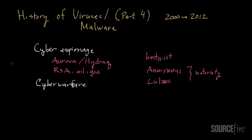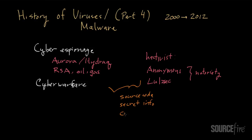You might be asking why these people care about this data and what they're trying to go after. The big targets are things like source code and proprietary information — secret information about an organization's plans for the future that they don't want made public. That's obviously the kind of stuff some of these attackers are going after because it's worth quite a lot. Customer data is another big target, maybe from transactions.